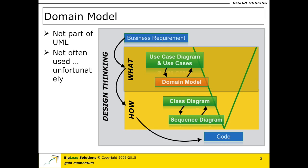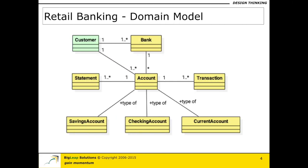So let us try and understand how to go about arriving at a domain model. Before we look at the definition of a domain model, let us see an example. In this slide, I have given a small portion of the retail banking domain model. Irrespective of where we are currently staying or what country or what state, we can all go to a bank closest to us and open an account. The type of account might vary slightly in terms of the features they offer, but most banks do offer some kind of a saving account, a current account, or a checking account.